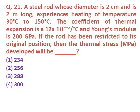Question twenty: A steel rod of diameter 2 cm and length 2 m is heated from 30°C to 150°C. The coefficient of thermal expansion is 12×10⁻⁶ per °C and Young's modulus is 200 GPa. If the rod is restricted to its original position, the thermal stress developed is 288 MPa.